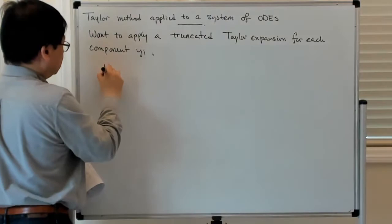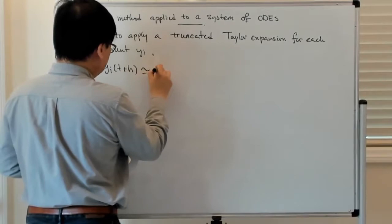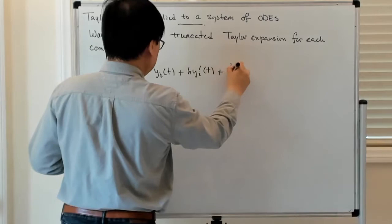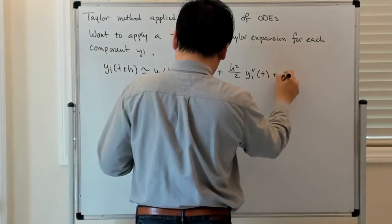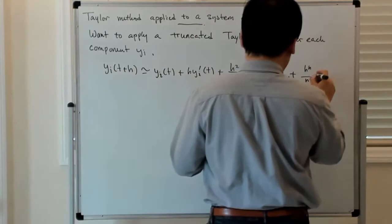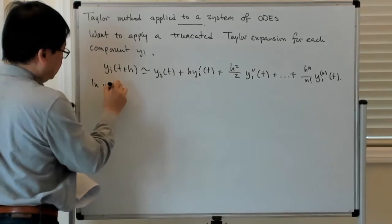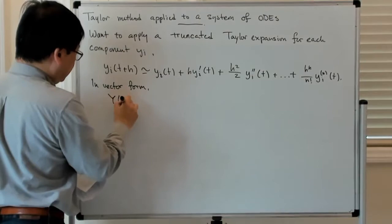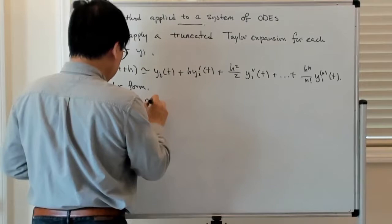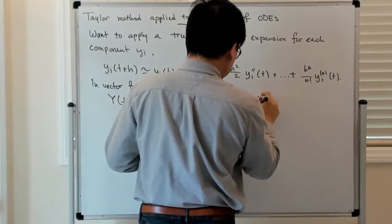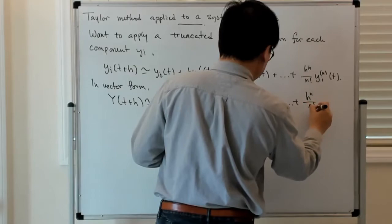Let's call that yi. So yi at the new time t plus h is approximately equal to yi at t, plus h·yi′(t), plus h²/2·yi″(t), all the way up to h^n/n! times the nth derivative of yi at t. You can write this in vector form: Y(t+h) ≈ Y(t) + h·Y′(t) + h²/2·Y″(t) + ⋯ + h^n/n!·Y^(n)(t).